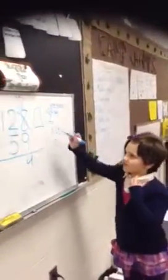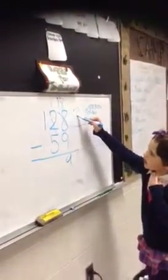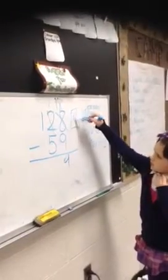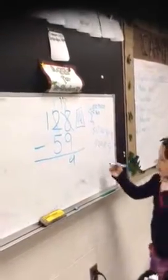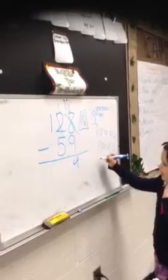Can we take away 5 from the 10s? No, so we have to ungroup our 100. Now we have 10 tens.